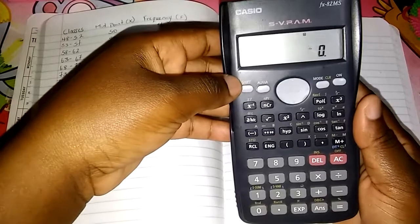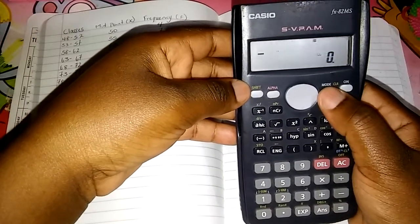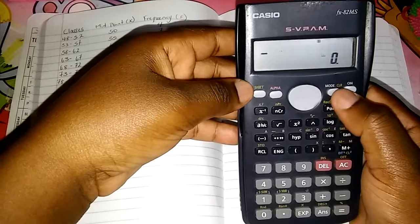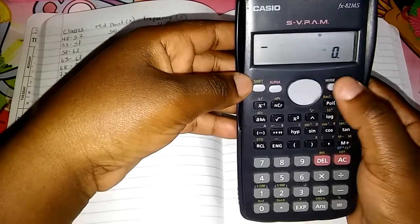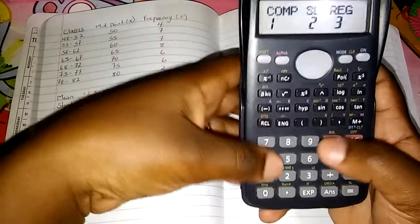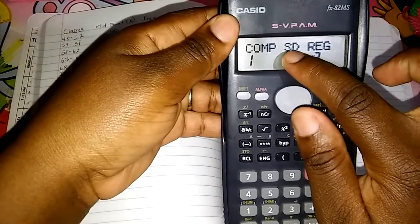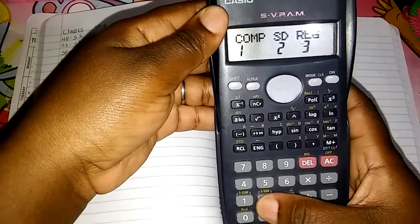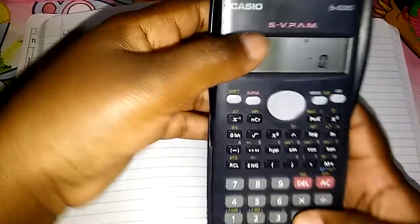Next step, we have to ensure that this calculator is on the SD mode, standard deviation mode. So let us select mode, and then we're going to select 2. The corresponding number for standard deviation is 2, so we select 2. See, it's now on standard deviation mode.